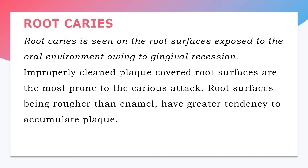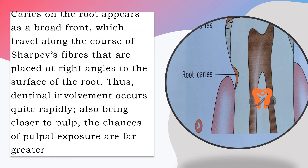Root caries is seen on root surfaces exposed to the oral environment owing to gingival recession. Improperly cleaned, plaque-covered root surfaces are more prone to caries attack. Since root surfaces are rougher than enamel, they have a greater tendency to accumulate plaque. Caries on the root appears as a broad front and travels along the Sharpey's fibers, which are placed at right angles to the root. Since the outer layer — cementum — is very thin, it gets rapidly destroyed and caries immediately attacks the dentine, rapidly reaching the pulp. Pulp exposure chances are therefore much higher in root caries.